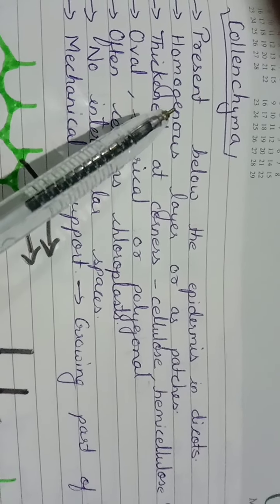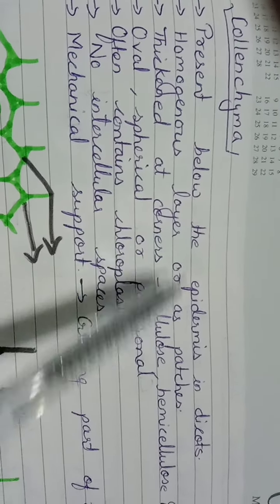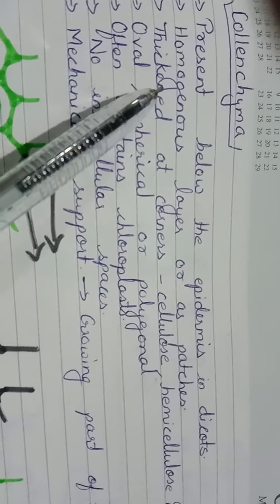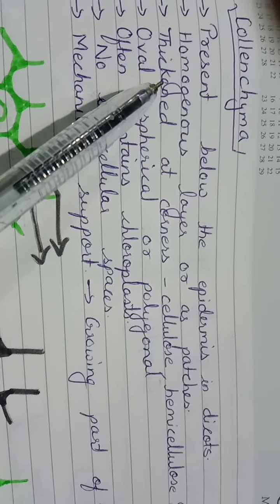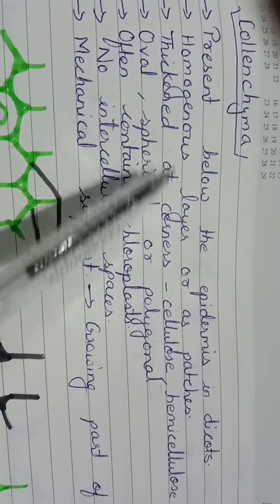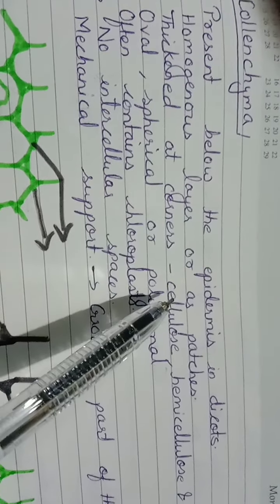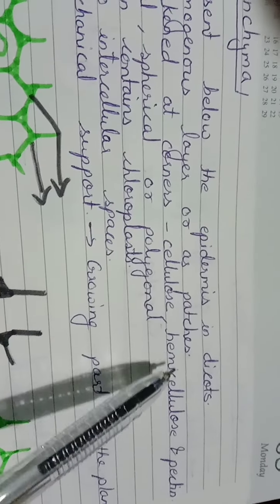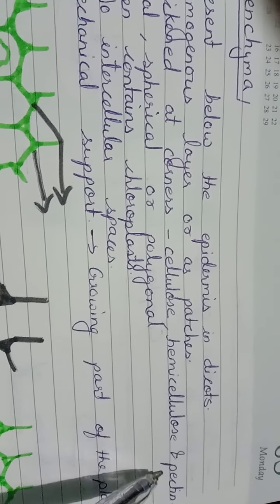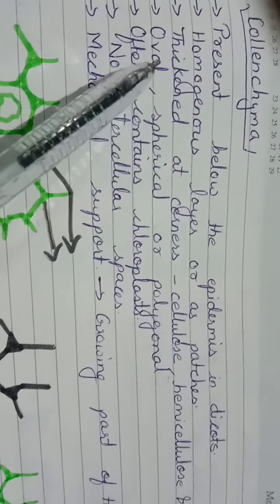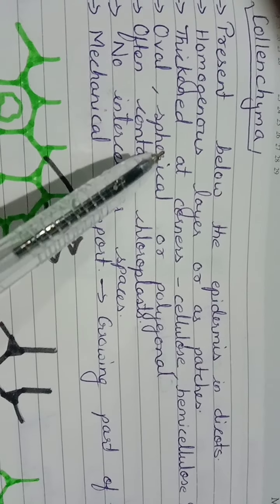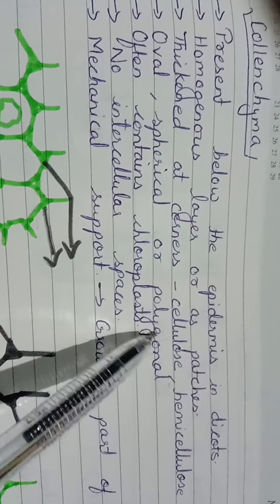The special character of colenchyma is it is thickened at corners because of the deposition of cellulose, hemicellulose, or pectin. It can be oval shaped, spherical, or polygonal. Sometimes it contains chloroplast, so it also undergoes photosynthesis.